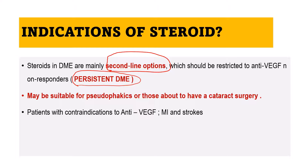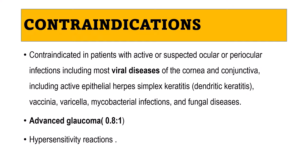Steroids are given in patients in which anti-VEGFs are an absolute contraindication, such as those with myocardial infarction and cerebrovascular accidents. Steroids are contraindicated in patients with active or suspected ocular or periocular infection, particularly viral diseases — active epithelial herpes simplex keratitis, vaccinia, varicella, or TB and fungal infections. In advanced glaucoma, specifically if CDR ratio is about 0.8:1 or more, steroids are usually contraindicated. Additionally, if the person has any hypersensitivity to steroids or components of the injection, these drugs should be avoided.